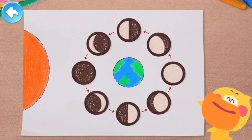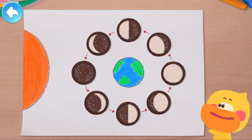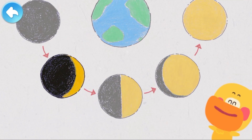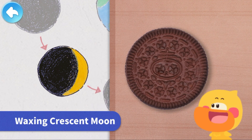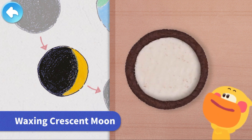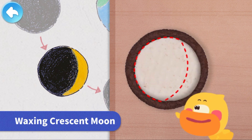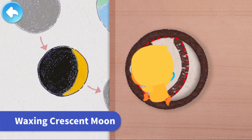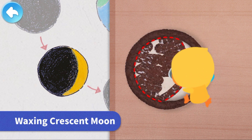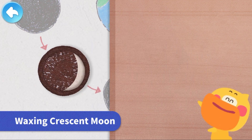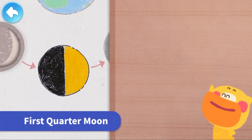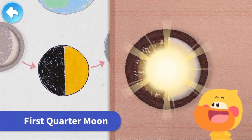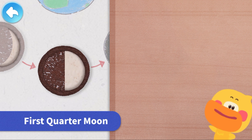A delicious and fun cookie moon phases diagram. All we need are some sandwich cookies and a piece of paper. Let's make it together. Twist the cookie. Leave half of the cookie with filling — it's a waxing crescent moon. It's a crescent moon cookie. Next piece: the first quarter moon. Done with the semicircular first quarter moon.